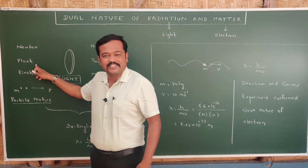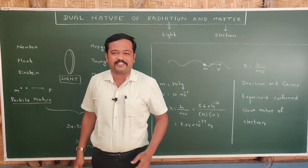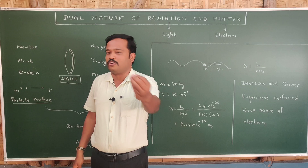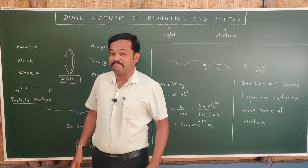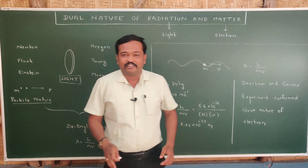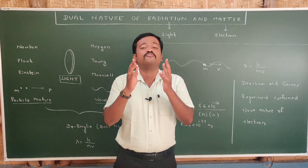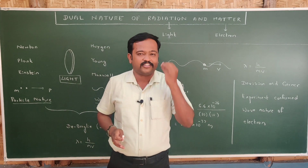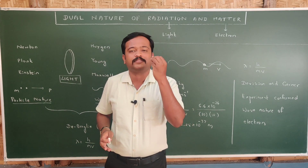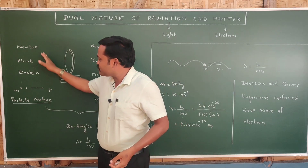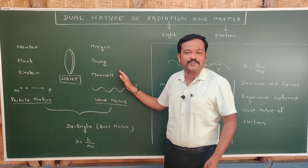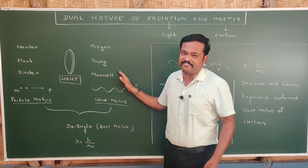Then came Planck. In his quantum theory, he said that light is made up of particles called quanta, and he supported particle nature. Then came Einstein, who explained the photoelectric effect considering light as photons — meaning they are particles. So Newton, Planck, and Einstein supported particle nature of light, while Huygens, Young, and Maxwell supported wave nature of light.